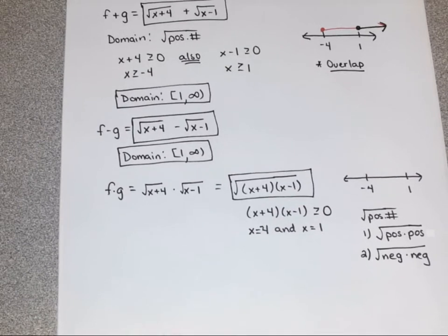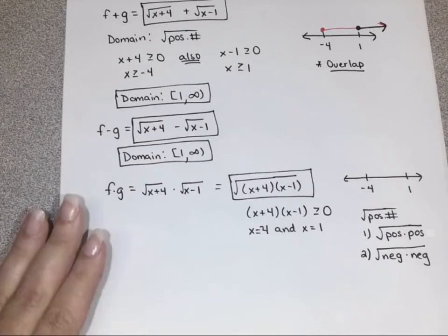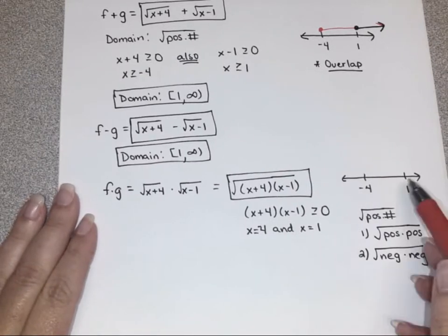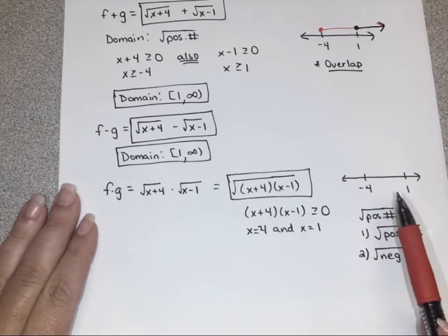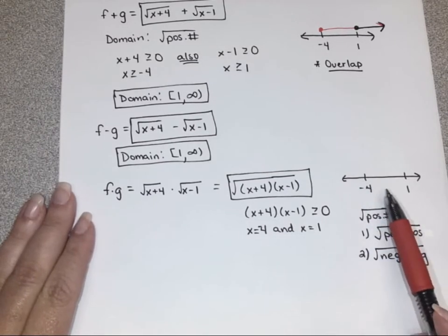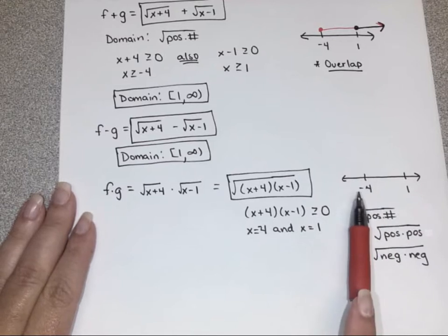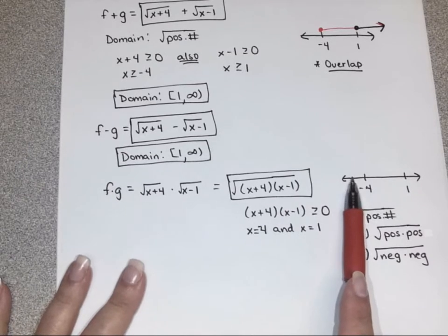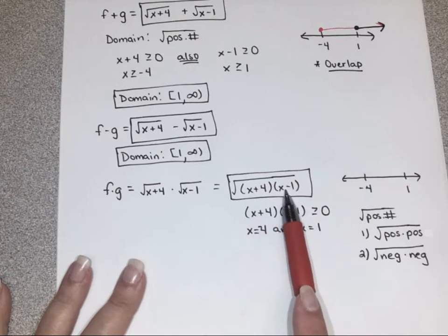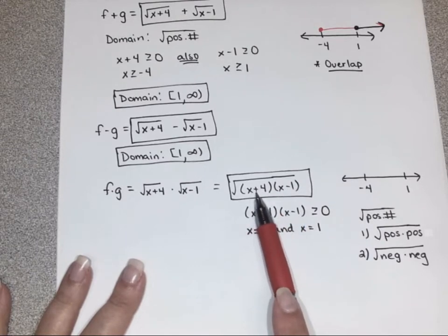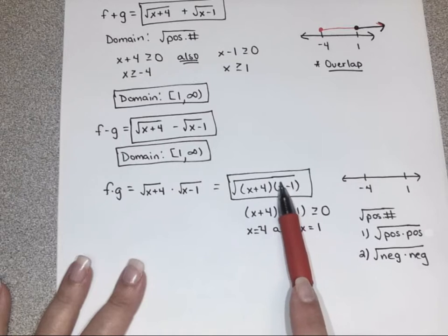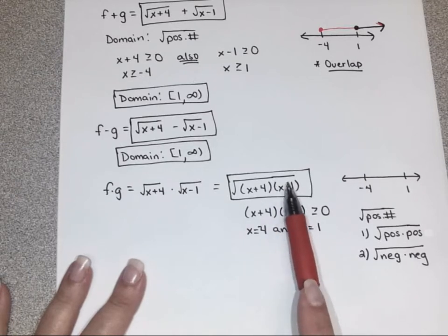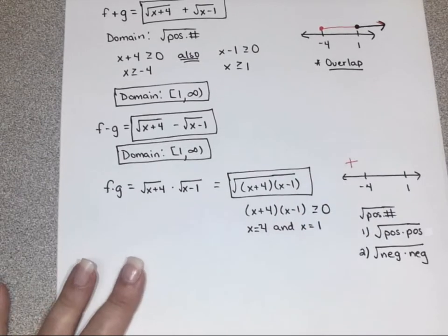So essentially, what we have to do is think about the number line. We're supposed to pick test points. So let's think about something over here — a number like negative 5. If you plug in negative 5, you're going to get a negative something times a negative something, so when you do a negative times a negative, you get a positive. What's something in between negative 4 and 1? Zero — it's always really nice to plug in. What happens if you plug in zero? You're going to get a positive times a negative.